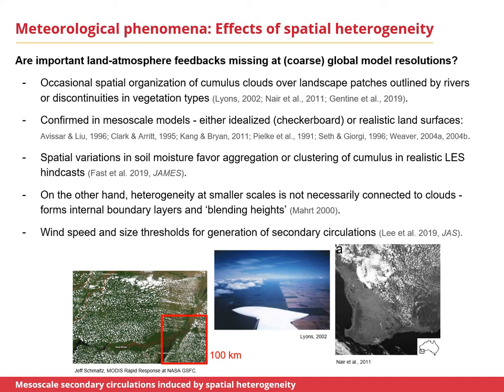Of course, there have been studies looking at cloud scales in terms of effects of spatial heterogeneity on clouds. Cumulus clouds are organized on the mesoscale, so surface heterogeneity can affect clouds by driving mesoscale circulations in the way that a sea breeze is driven by a land-ocean contrast. These are shallow cumulus clouds shown in the figure around rivers in the Amazon basin. We also see clouds with a preference for one side of the rabbit-proof fence in southwest Australia, which separates natural from agricultural land. Mesoscale models have confirmed that surface heterogeneity can induce these flows and clouds.